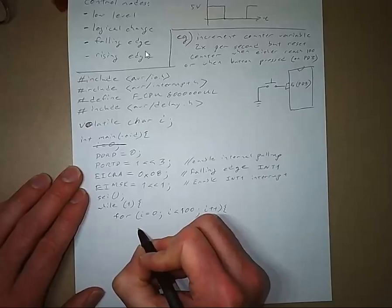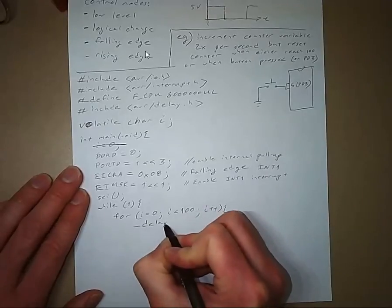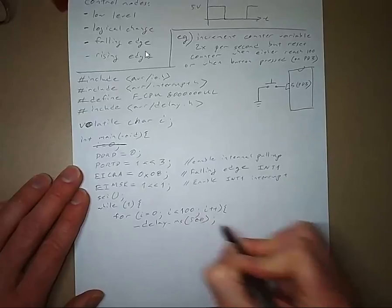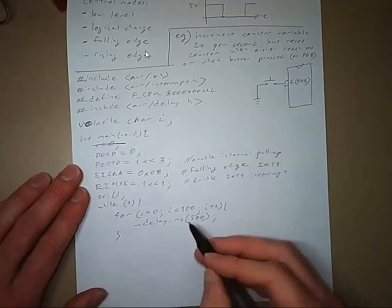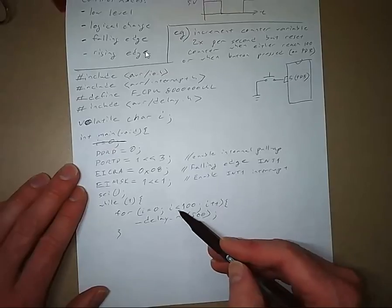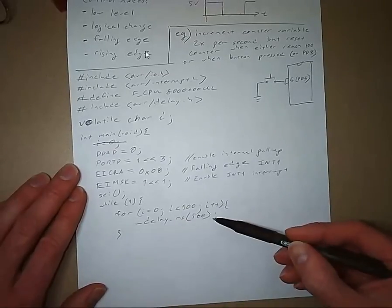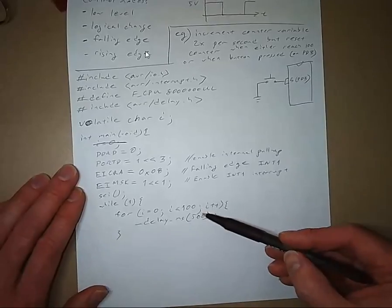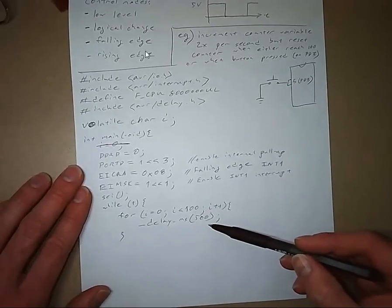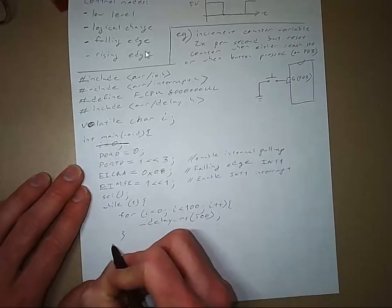And what do we do inside the for loop? We just delay for half a second, delay 500 milliseconds. And then after we've delayed, we add one to i, check to make sure it's still less than 100 and then delay again. So all we're doing here is counting up from zero to 99. And we're adding one to the variable i every half a second. And that's all we're doing inside of this program.